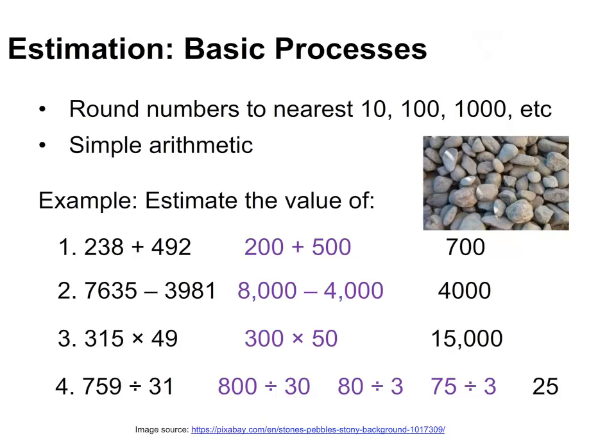To get an estimate of the size of the answer, round each number to its highest order and perform the basic operation required. So in the first example, 238 and 492 are both rounded to the nearest 100, and then the answer is estimated to be of the order of 700. What it's important not to do here is to do the calculation first, and then round off the answer.